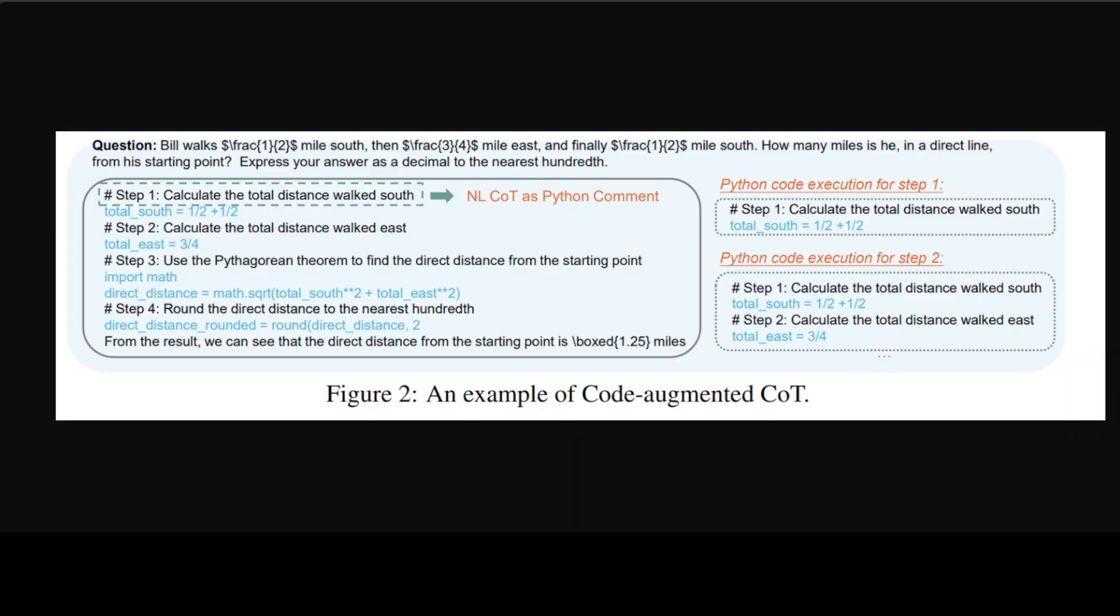Now if you closely look at this, the previous MCTS approach primarily generated natural language chain of thoughts, but LLMs often suffer from hallucinations, producing incorrect and irrelevant steps yet still arriving at the correct answer by chance sometimes. These are really challenging to detect and eliminate. That is where this code-execution augmented chain of thought they have introduced, which is quite interesting.